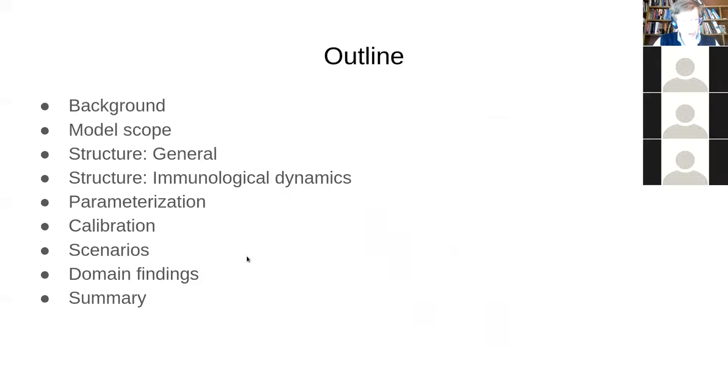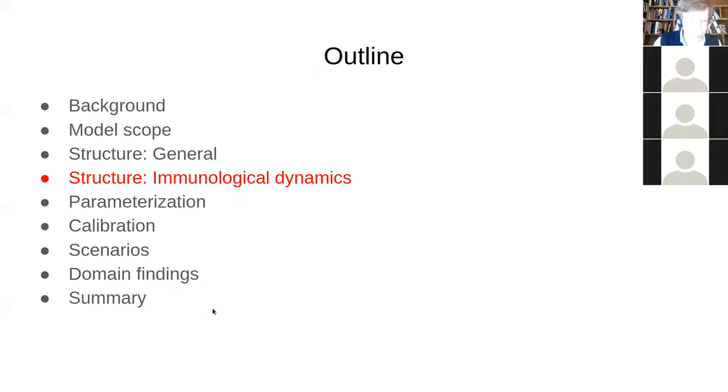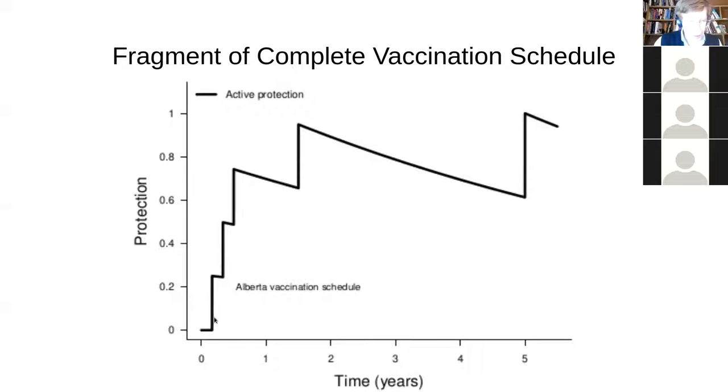Some of their siblings would be at the same school or other schools, might bring it around and a baby, a new baby might be at home, for example. So we had multiple types of contacts, and we actually spent a lot of time getting the contact dynamics right. I'm not going to go into the immunological dynamics, but this was a model that had some kind of multi-level structure.